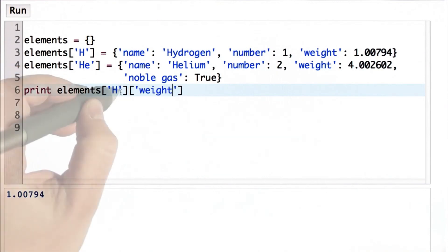And we can change the element to look up the value for helium instead of for hydrogen. And now we get the 4.002, which was the weight of helium.